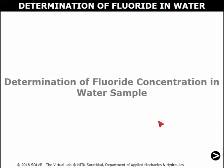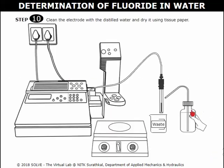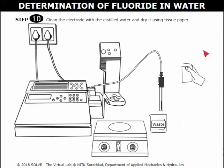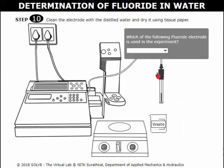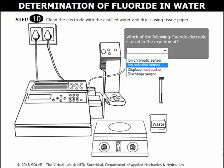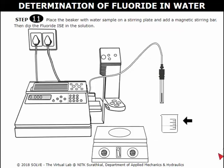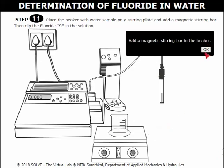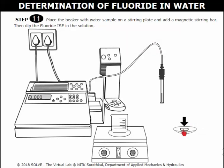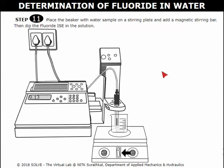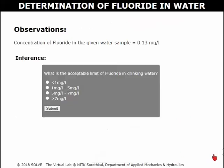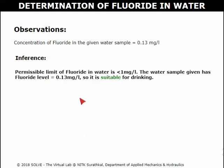Determination of fluoride concentration in water sample. Click here to clean the electrode with distilled water and dry it using tissue paper. Select the correct answer for the pop-up question to proceed to the next step. Click here to place the beaker with the water sample on a stirring plate. Click on the magnetic stirring bar to place it in the beaker, then click on the electrode and dip the fluoride ISE in the solution. Switch on the magnet stirrer and stop the stirring after getting an accurate value. Select the correct answer for the pop-up question to proceed to the inference. These are the observations for the current experiment, and we can view the inference drawn from this experiment.